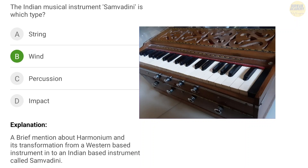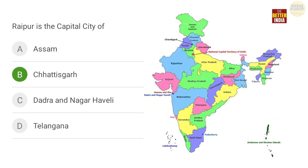Next question: the Indian musical instrument Sambadini — is it a string type, wind type, percussion type, or impact type? The correct answer is option B — it is a wind type instrument.